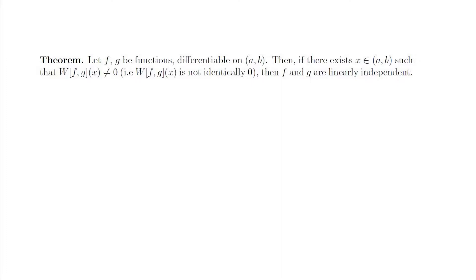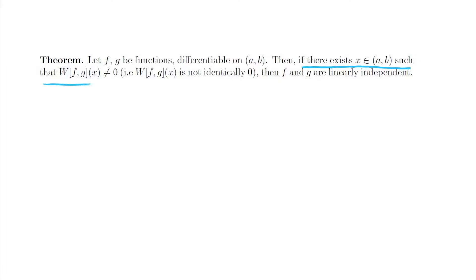Here's the theorem I'm going to prove. We have two functions f and g, and they're going to be differentiable on some open interval. Typically we have nice functions that are differentiable on negative infinity to infinity, but in theory we could have some smaller interval and this theorem would still work. Then, if there exists at least one x such that the Wronskian is non-zero — the Wronskian is actually a function of x that may be zero at some points but non-zero at others — then f and g are linearly independent.